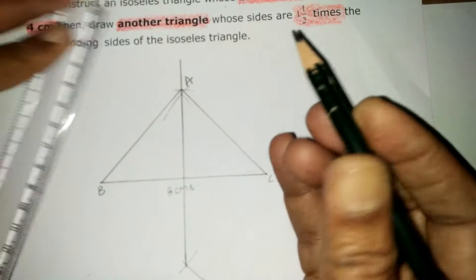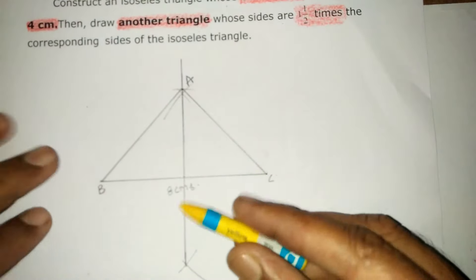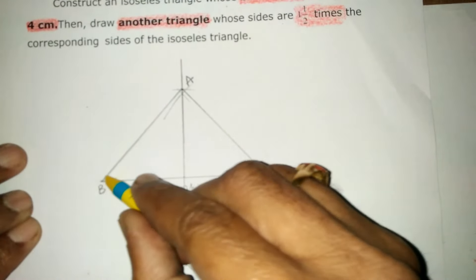This is the given isosceles triangle. We will shade it as yellow.